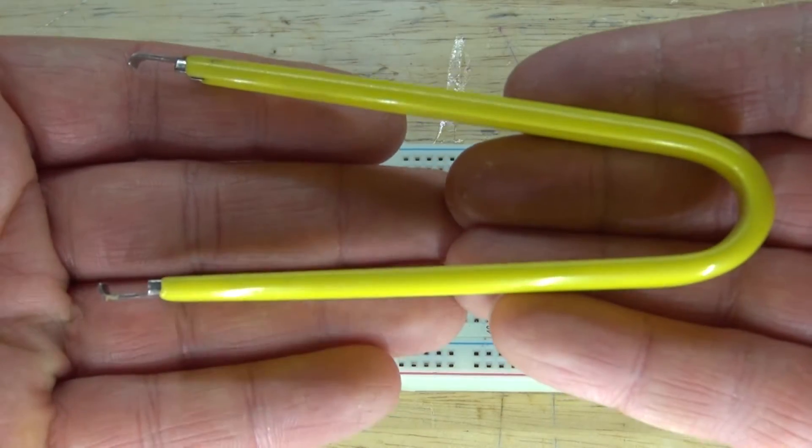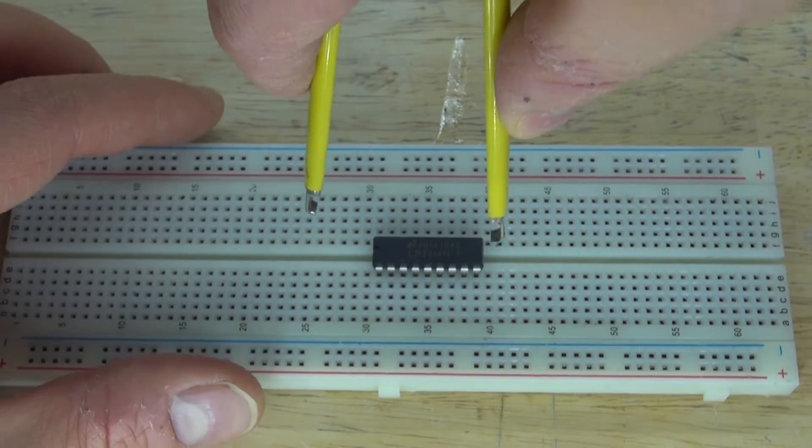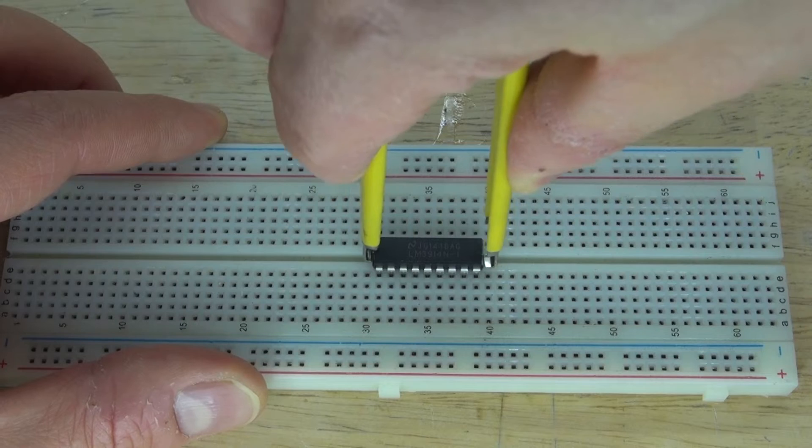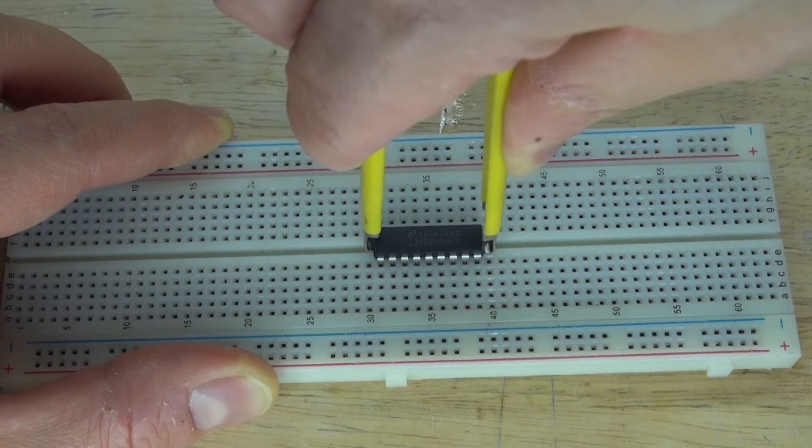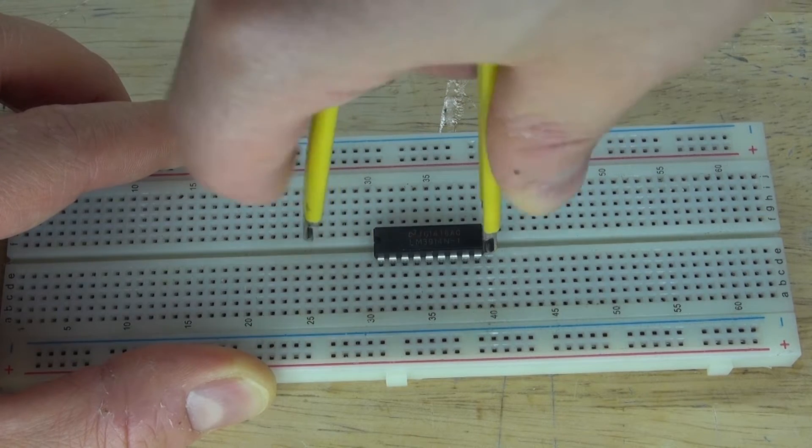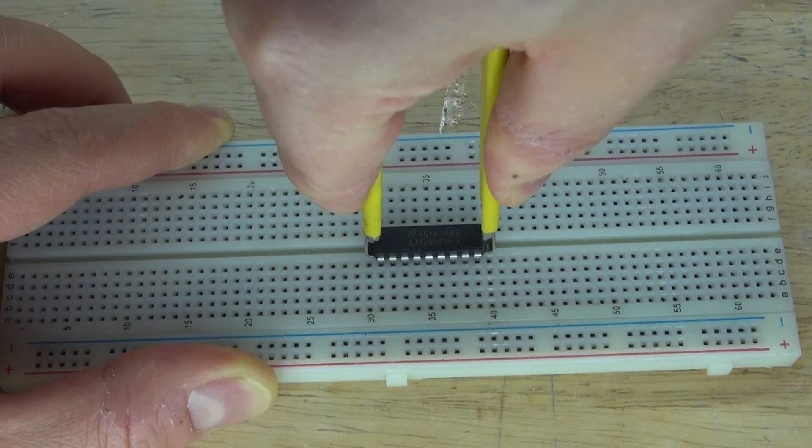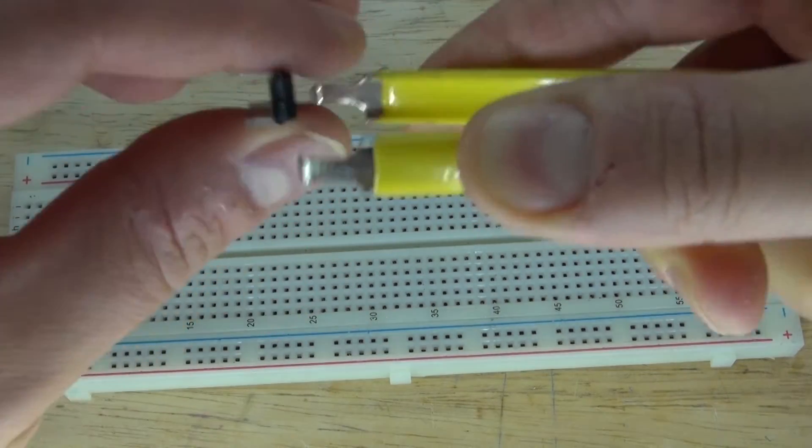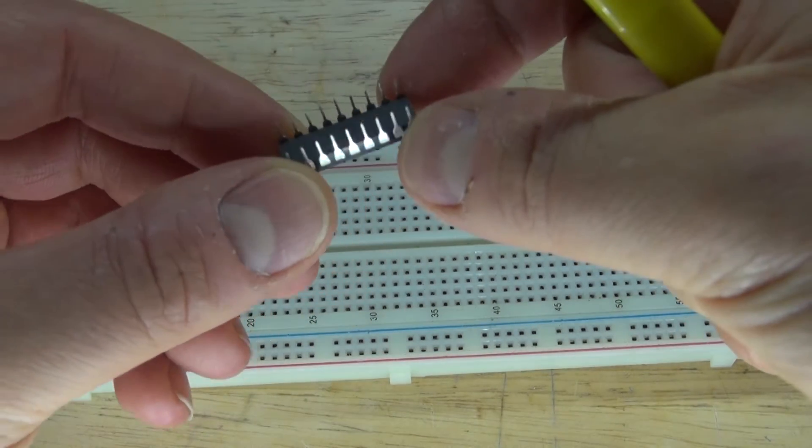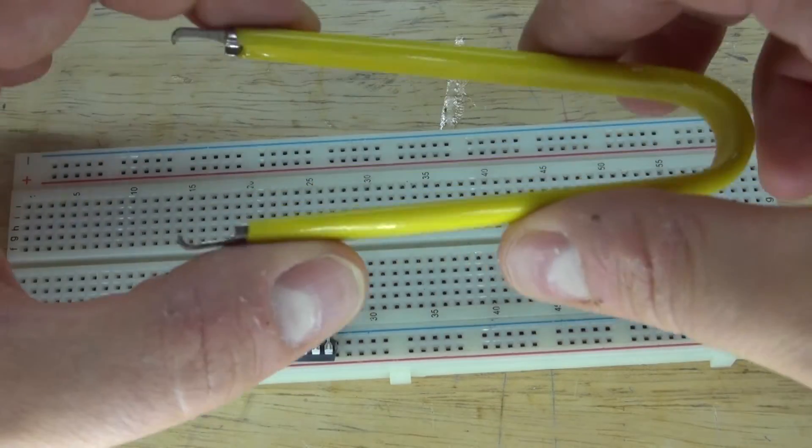There's also a very simple tool that's made for this. This tool right here picks up microcontrollers just like this. Place it on both sides, squeeze, and lift. This particular tool is not really my favorite, but it works. Comes out just like this, and as you can see, the legs come out nice and straight. Nothing is bent or damaged.